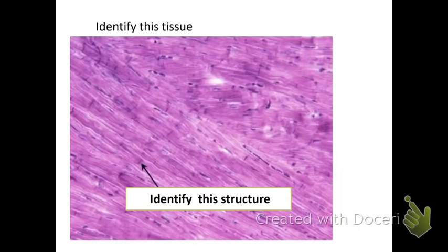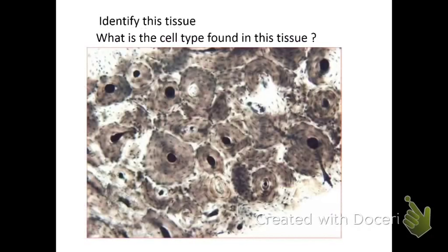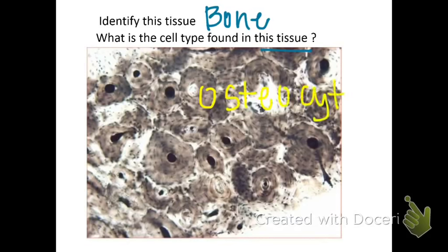This tissue is bone. What is the cell type found in the tissue? It's going to be an osteocyte. An osteocyte is a bone cell.